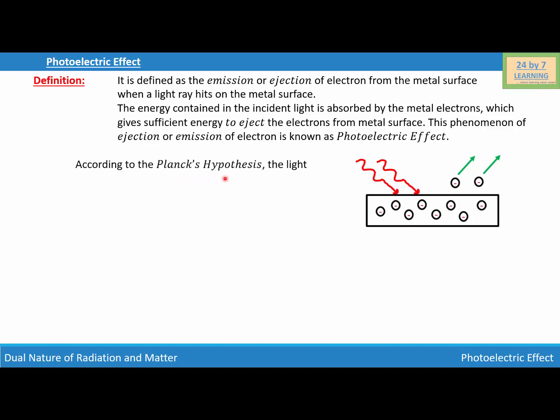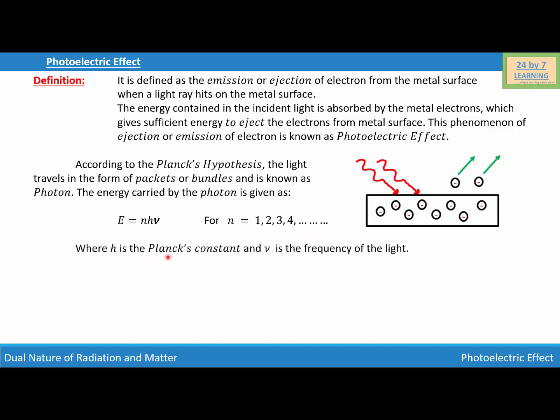Now, according to Planck's hypothesis, the light ray travels in the form of packets or bundles and is known as photon. The energy carried by the photon is given as E equals n h ν, for n equals 1, 2, 3, 4, and so on, where h is the Planck's constant and ν is the frequency of the light. And this is how we will define the photoelectric effect.